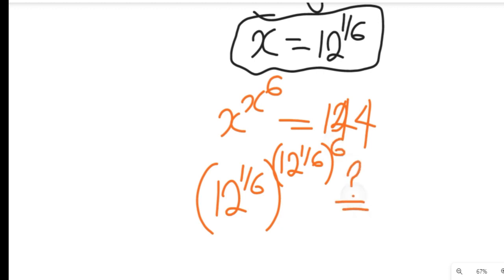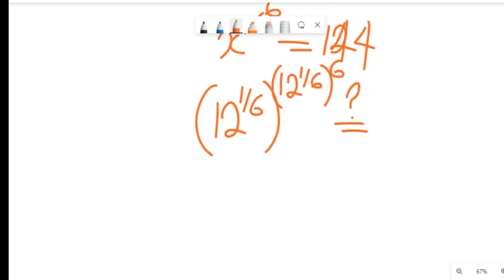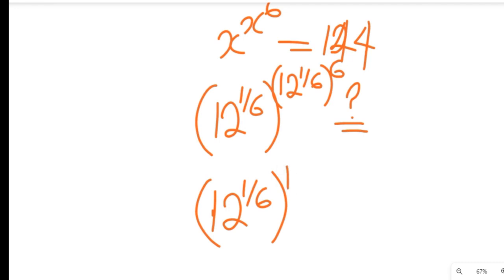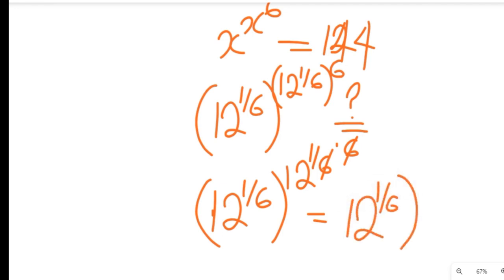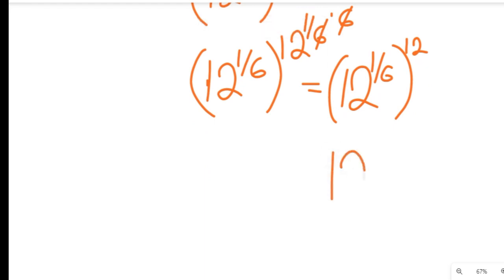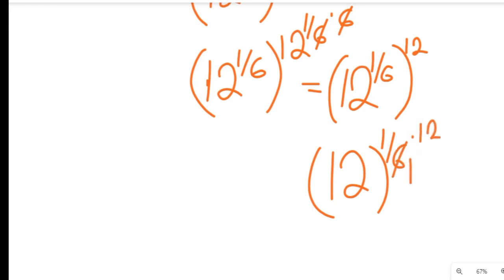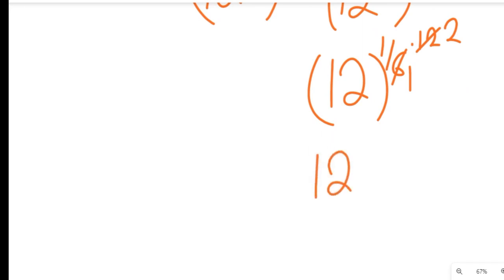Simplifying this following the law of indices, we get 12 to the power of 1/6 multiplied by 12 to the power of 1/6 multiplied by 6. This clears through, leaving 12 to the power of 1/6 multiplied by 12. Applying the law of indices to multiply the exponents, this simplifies to 12 to the power of 2, and 12 to the power of 2 equals 144. Confirmed!